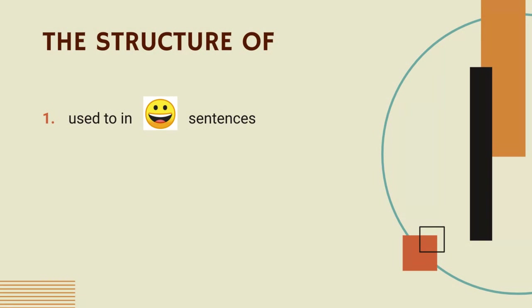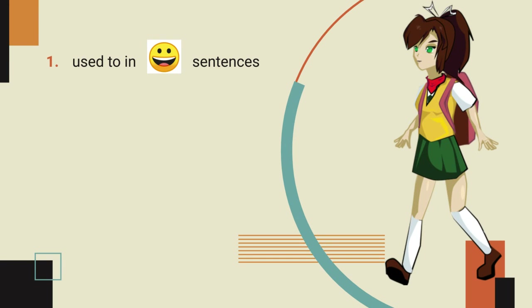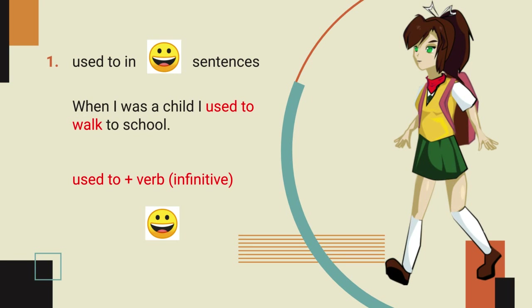What will you learn? You will learn the structure — what does the sentence look like with 'used to' in positive sentences, negative, and questions. We start with positive: 'When I was a child, I used to walk to school.' The structure is: used to plus verb, and the verb is always infinitive. For example: I used to walk, I used to learn, I used to swim — all verb infinitive.